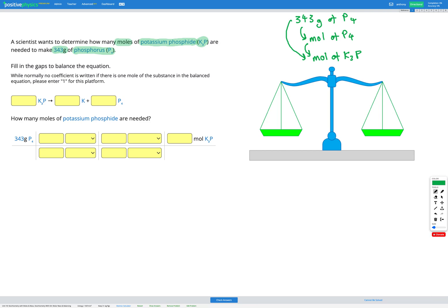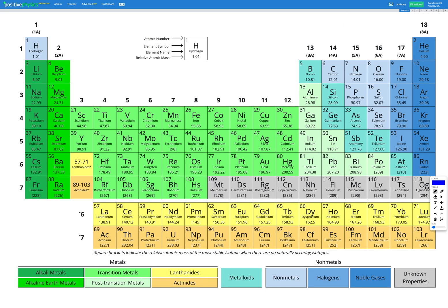So for our first step in our conversion, going from grams of P4 to moles of P4, we're going to need to know the molar mass of P4 in order to use that as our conversion factor. So let's go to our periodic table and find the relative atomic mass of phosphorus. Here's phosphorus.